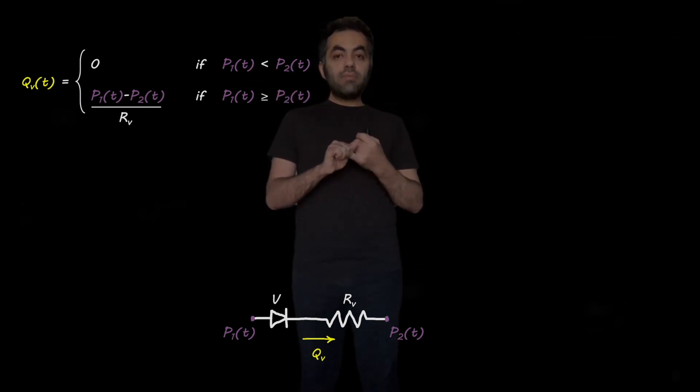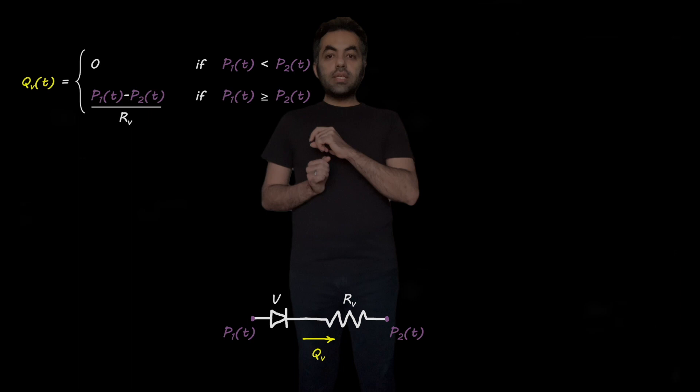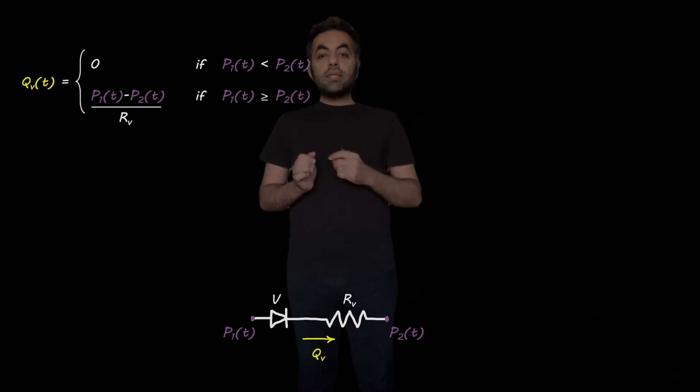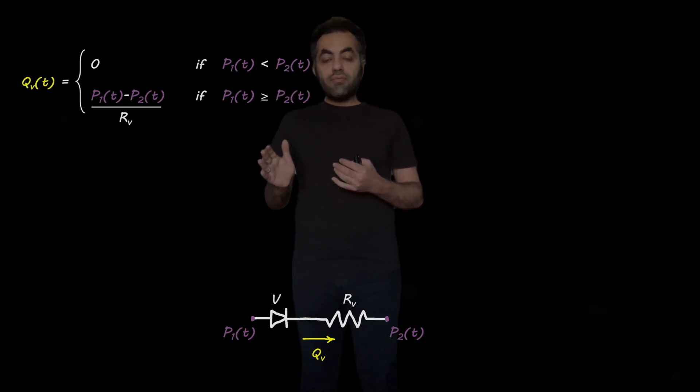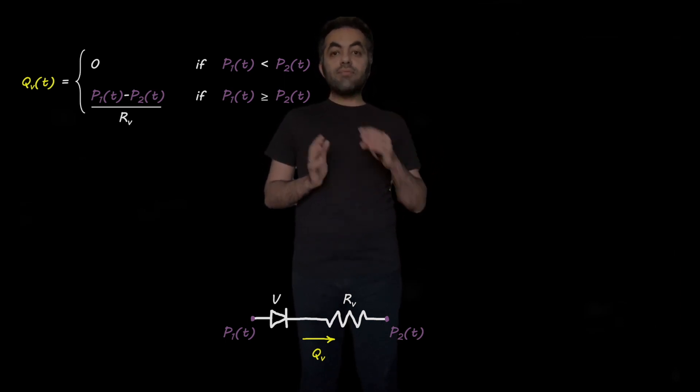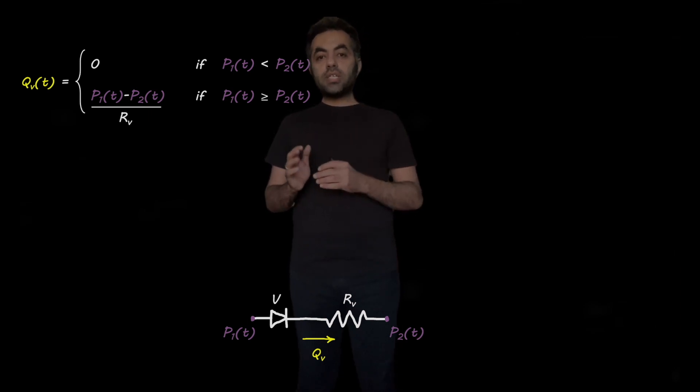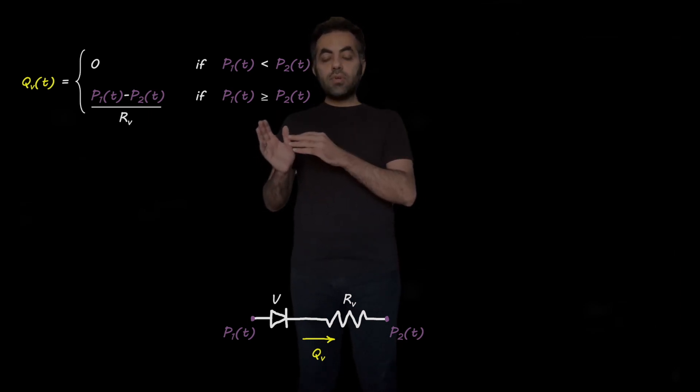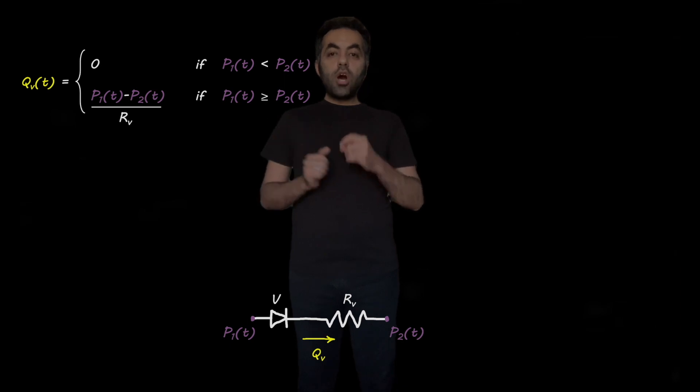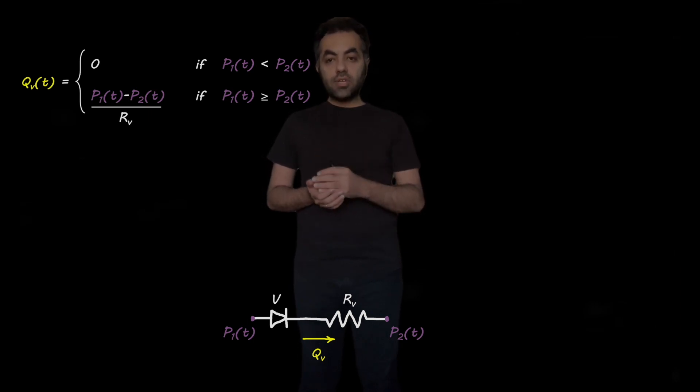Remember that the valves only allow blood flow in one direction. So look at these equations here. They say that when the pressure right before the valve is smaller than the pressure right after the valve, the valve is closed. But whenever the pressure upstream of the valve becomes larger than the pressure downstream of the valve, then there is a blood flow through the valve, across the valve.